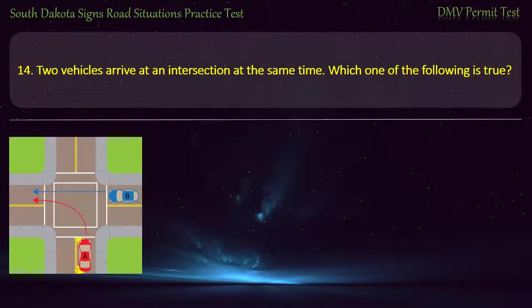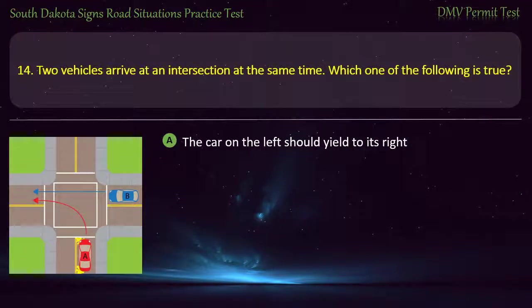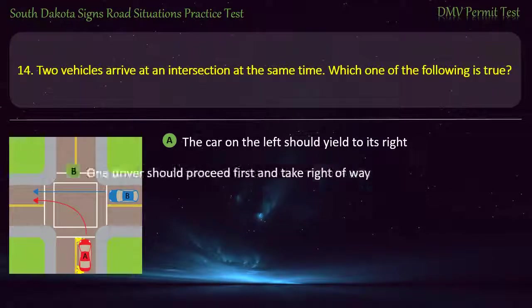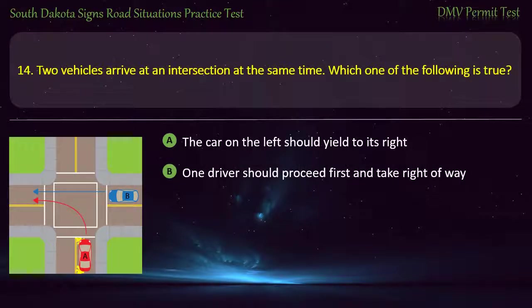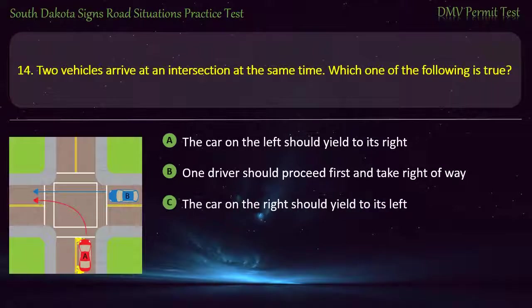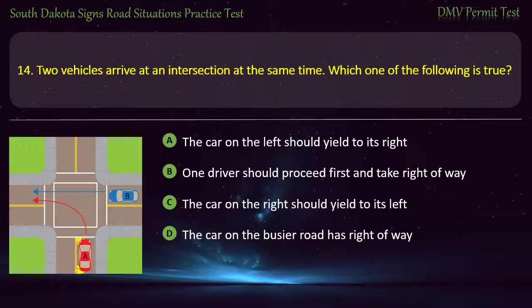Question 14: Two vehicles arrive at an intersection at the same time. Which one of the following is true? Answer: The car on the left should yield to its right.